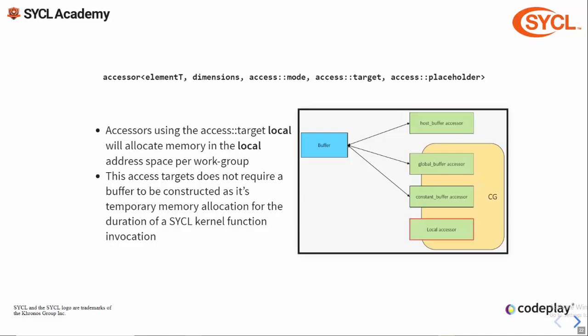Lastly we have the local access target. Local accessors are a special case because they are not constructed from a buffer. Instead you simply specify the type and the range of elements you want to allocate. Local accessors allocate memory per work group as they allocate memory in the local memory space, and they are only available for the duration of a kernel function.